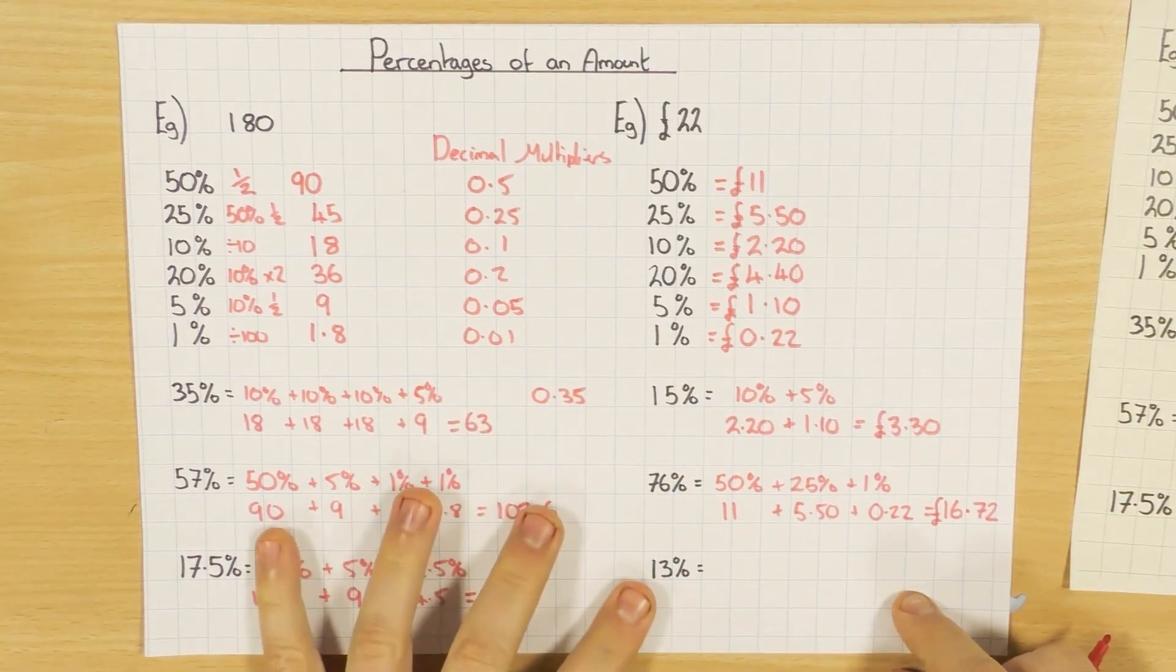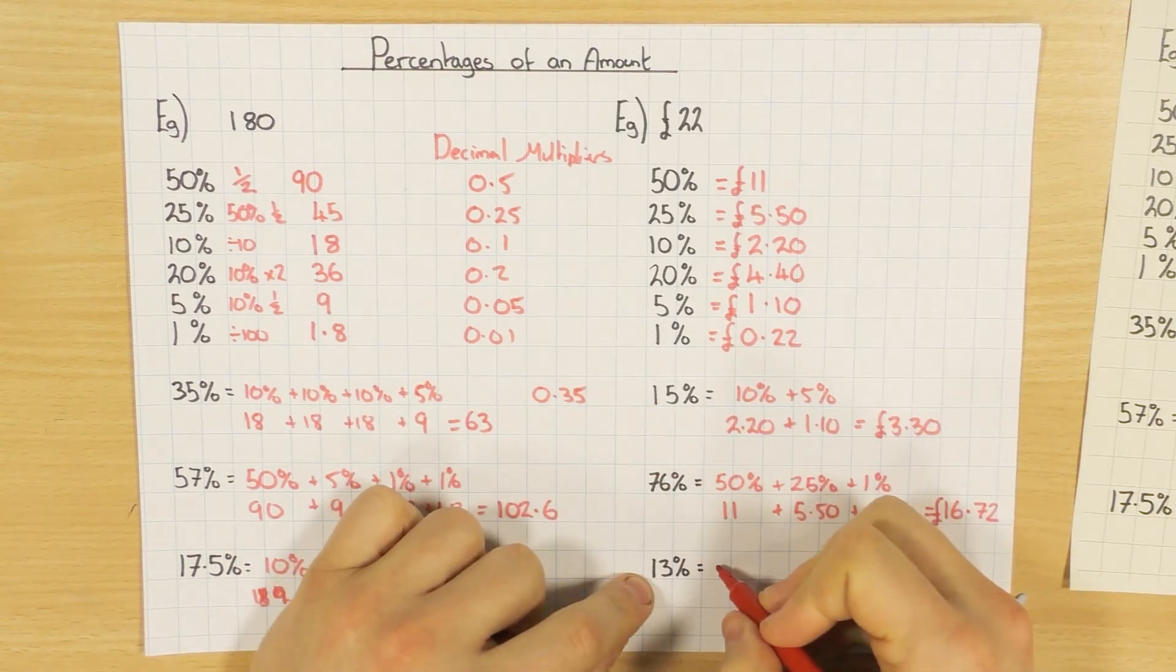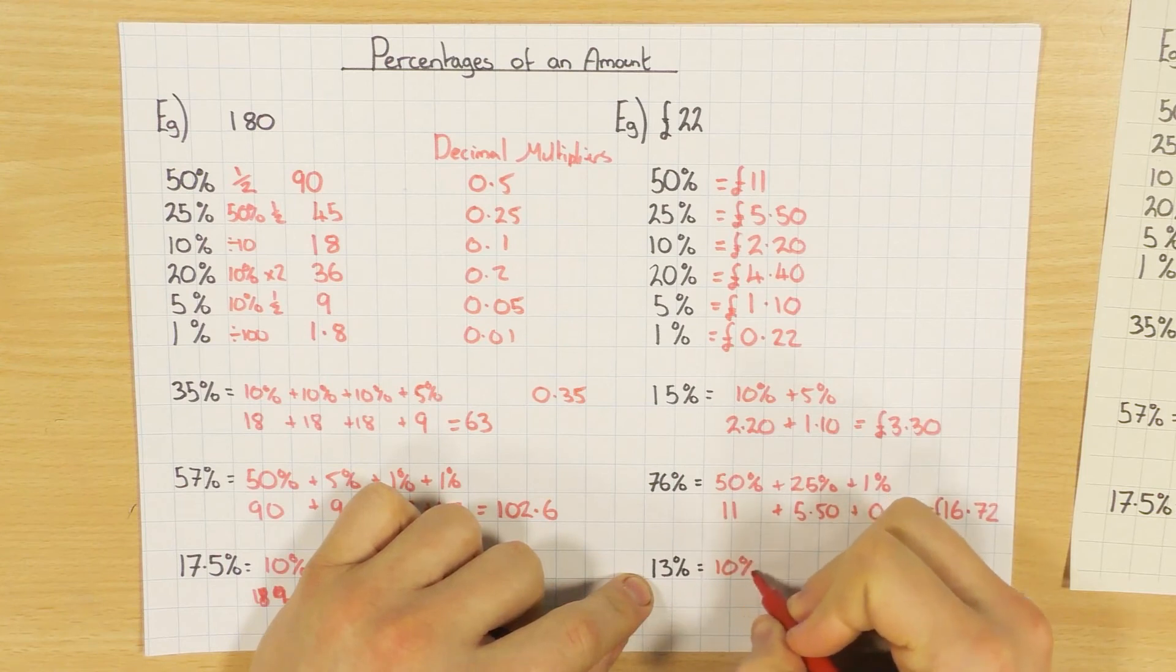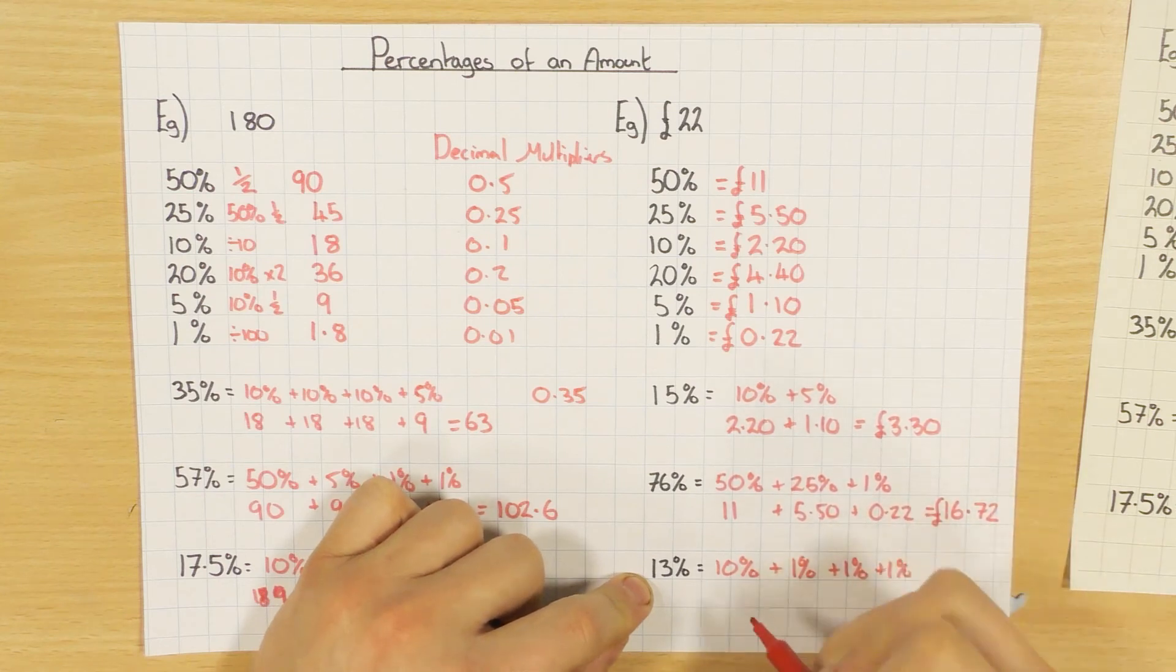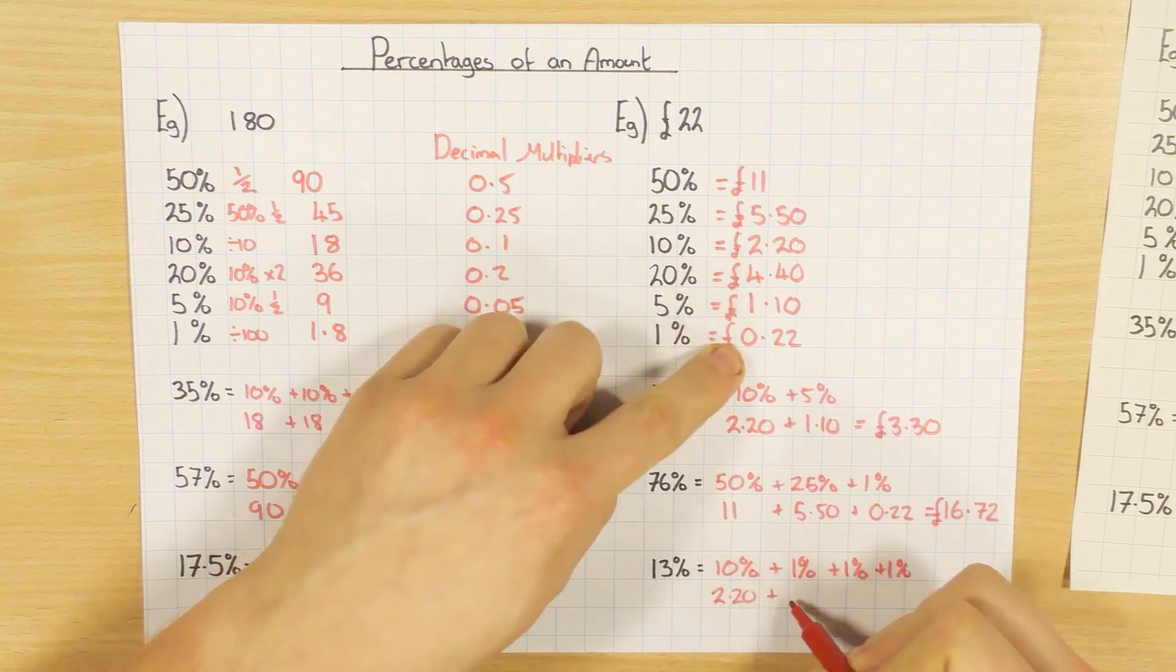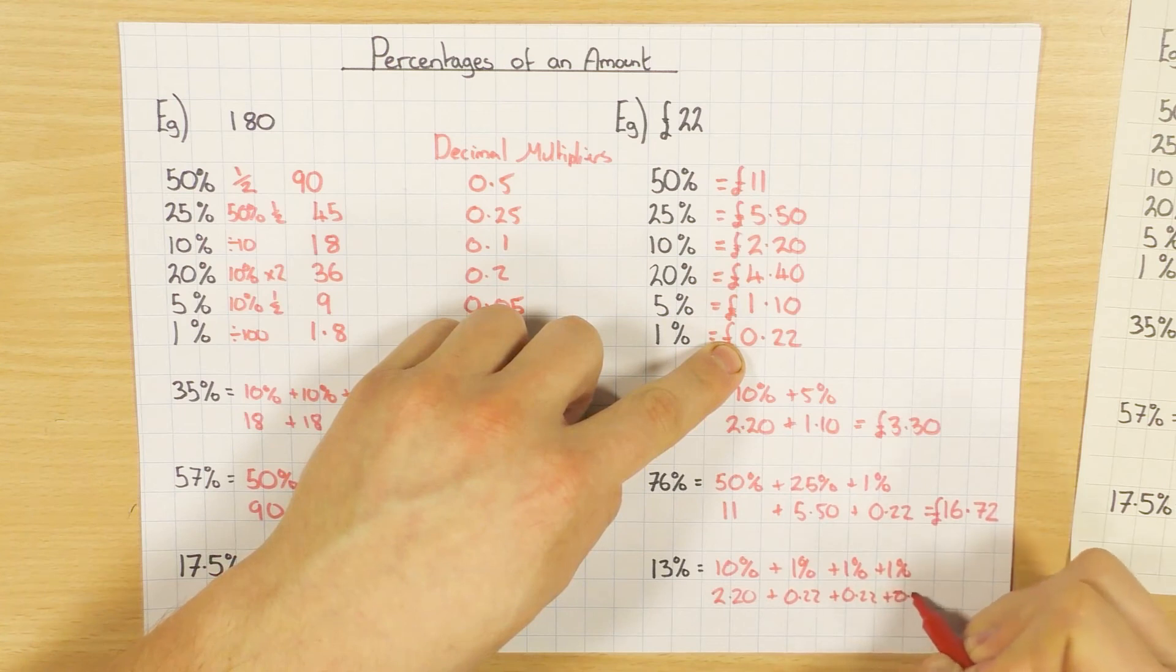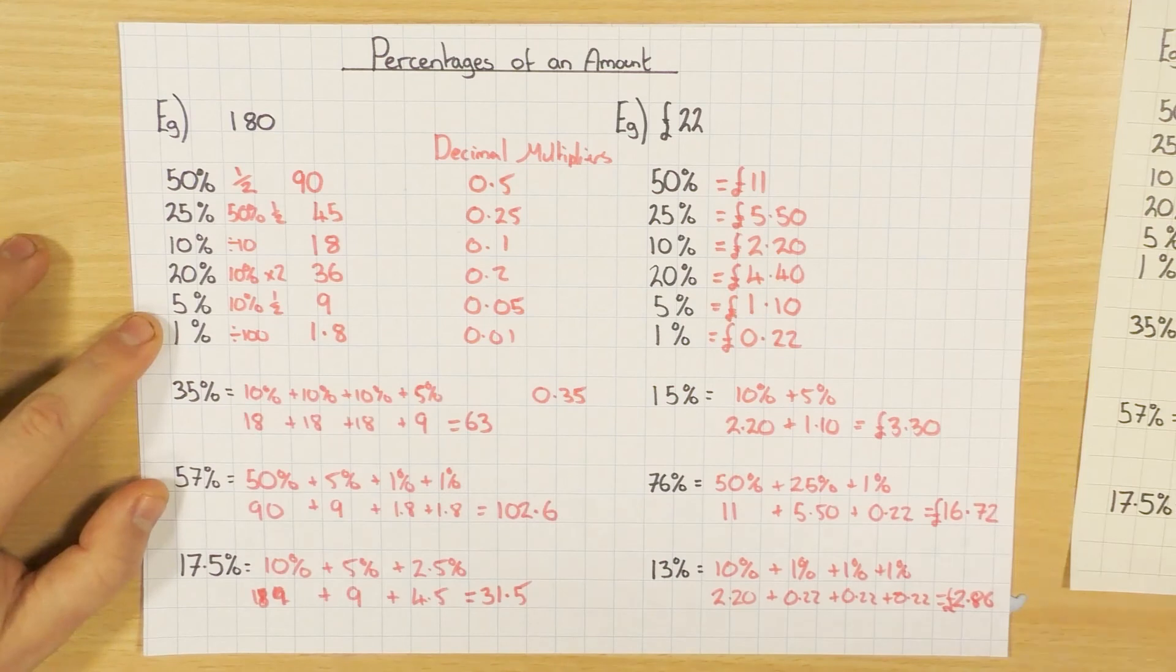And then finally, 13%. We could do 15% and take away two 1%s, I suppose, but let's keep it as adding, nice and easy. So 10% plus a 1% plus a 1% plus a 1%. So let's do that. 10%, so it's £2.20, plus 22p, plus 22p, plus 22p. And when you add them all together, you should have £2.86.